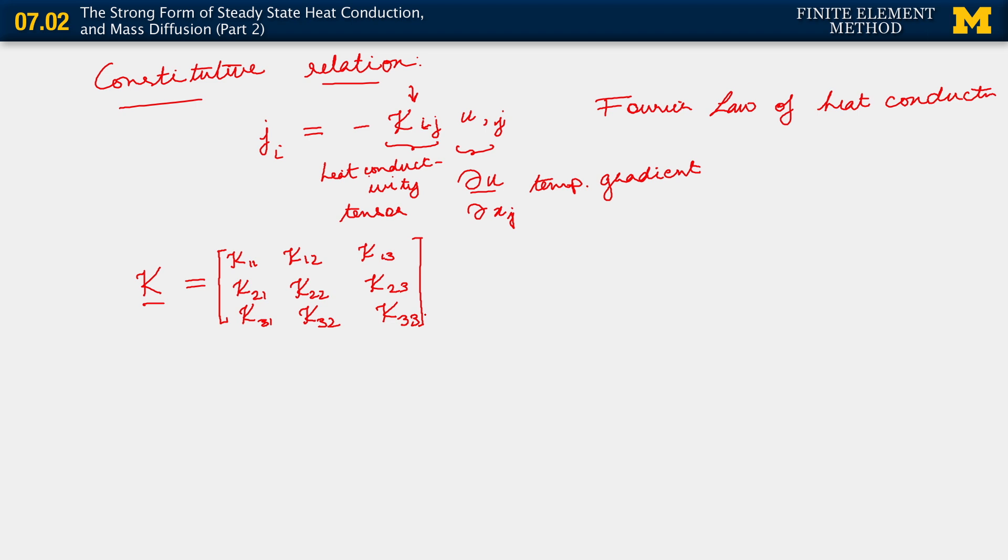Now, it turns out that this tensor κ is symmetric. And there are reasons for it to be symmetric. So we will consider κ to be symmetric, which we write as κ equals κ transpose. So this means that in general, the 1-2 component equals 2-1, 1-3 equals 3-1, and 2-3 equals 3-2, which is also written in coordinate notation as κ_ij equals κ_ji.